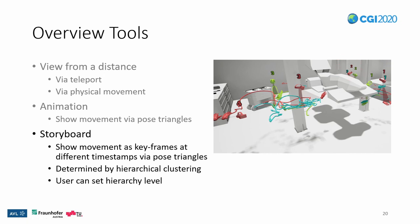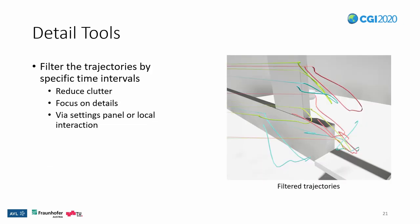Users can choose the number of displayed timestamps by changing the level of the hierarchy. For a more detailed view on the movement, users can filter the trajectories. This reduces clutter and lets users focus on certain timestamps, especially in regions with lots of movement. Users can filter via the settings panel or with local interaction, which allows them to filter not only based on timing but also spatially, since they can place the filter at a spatial region of interest.